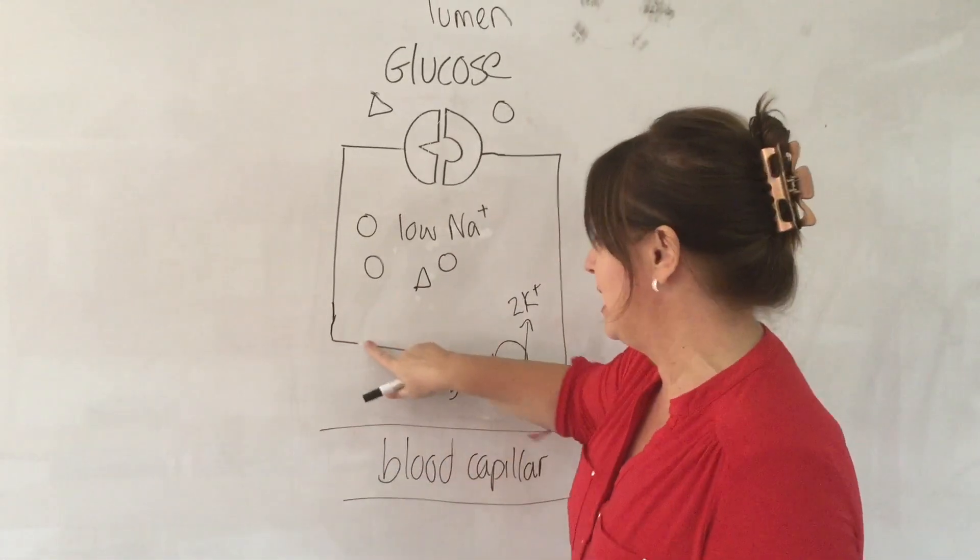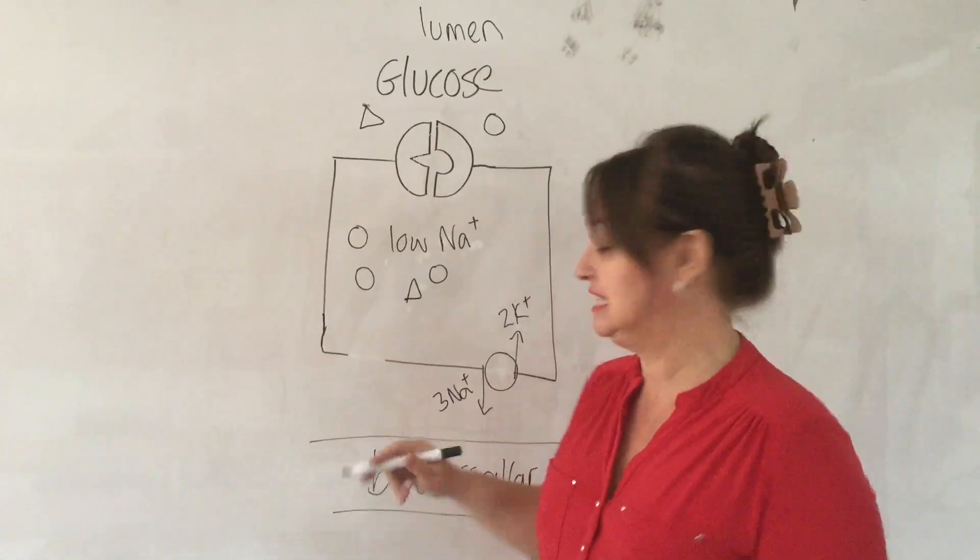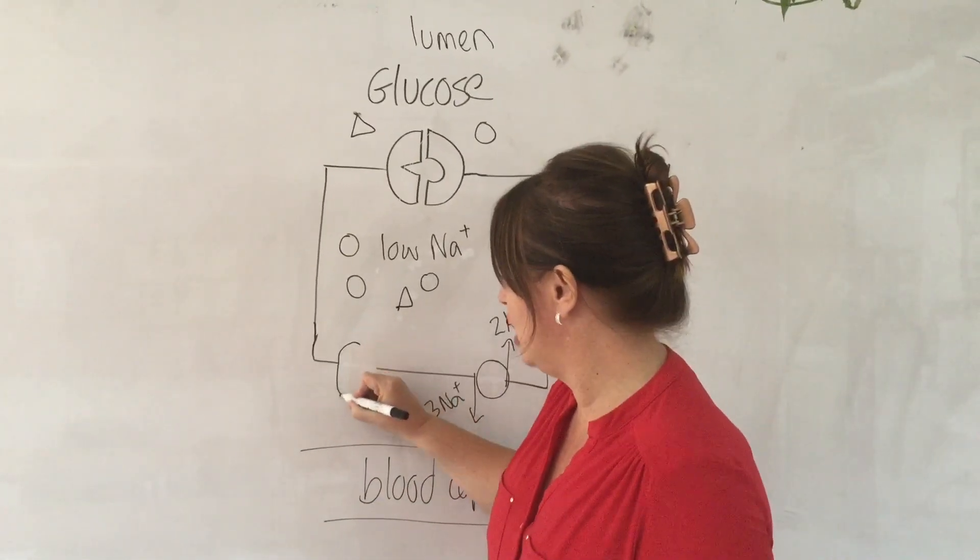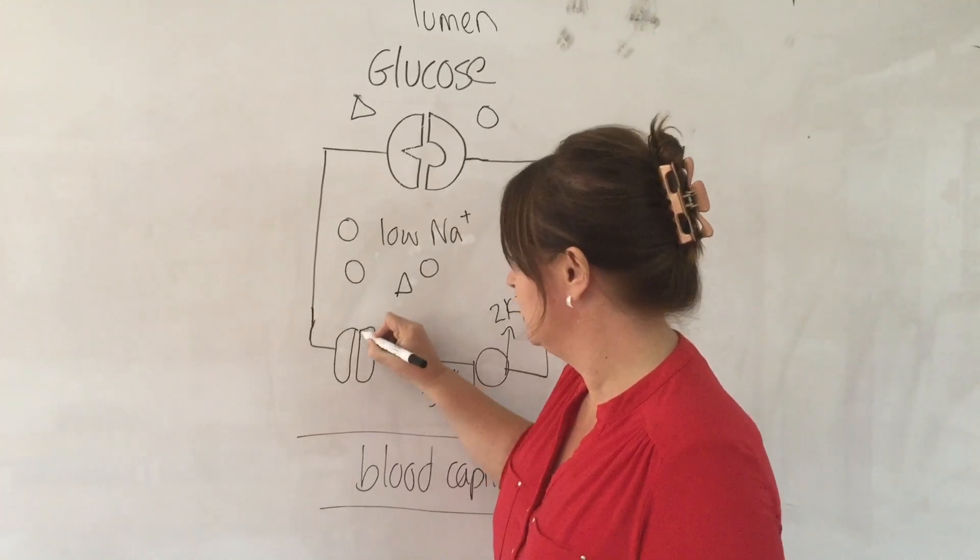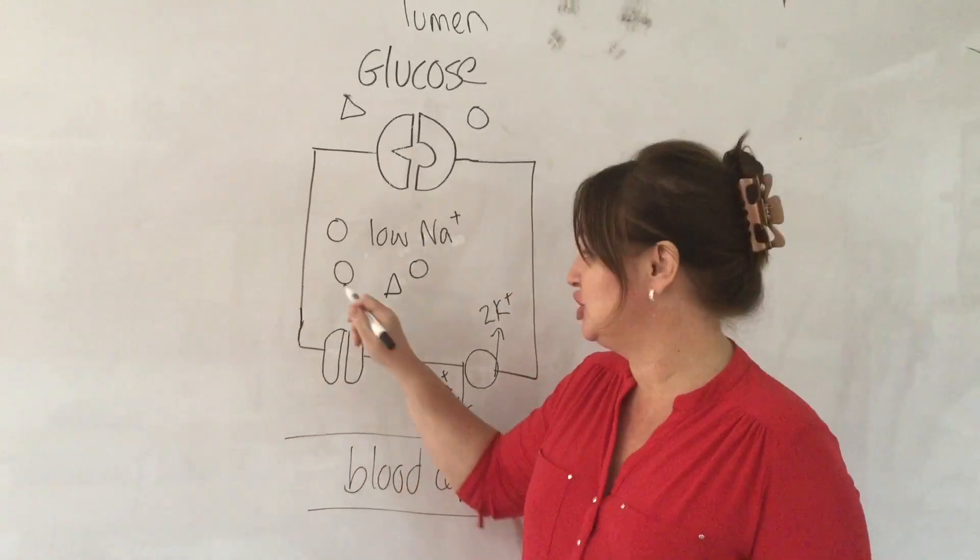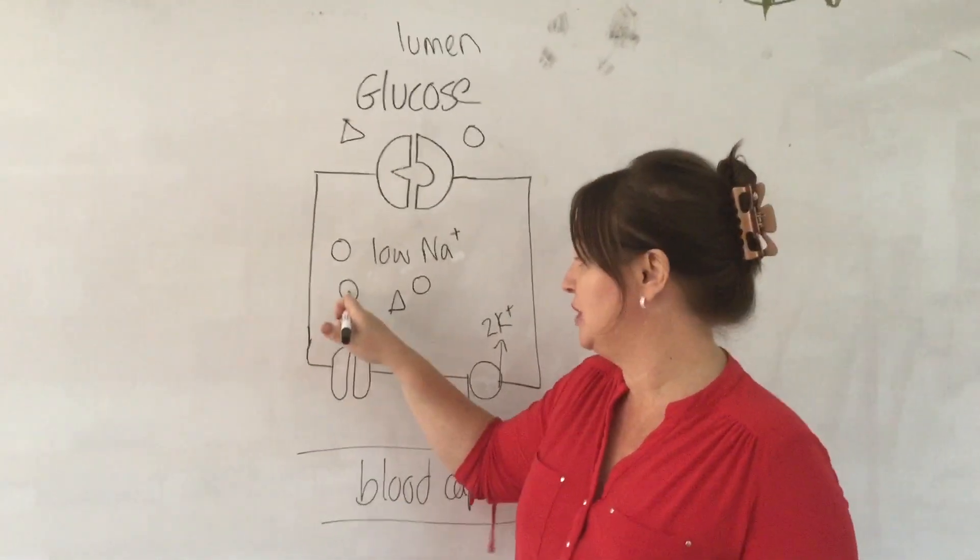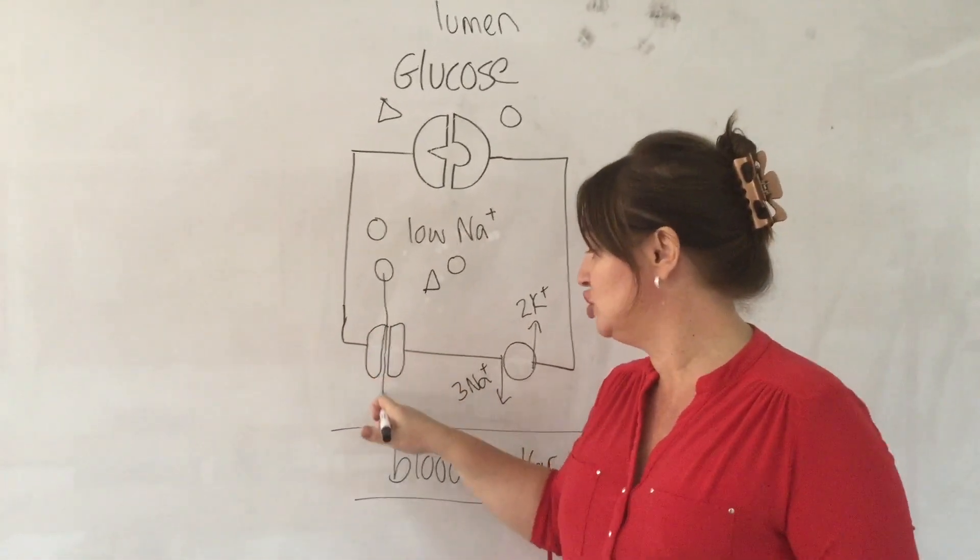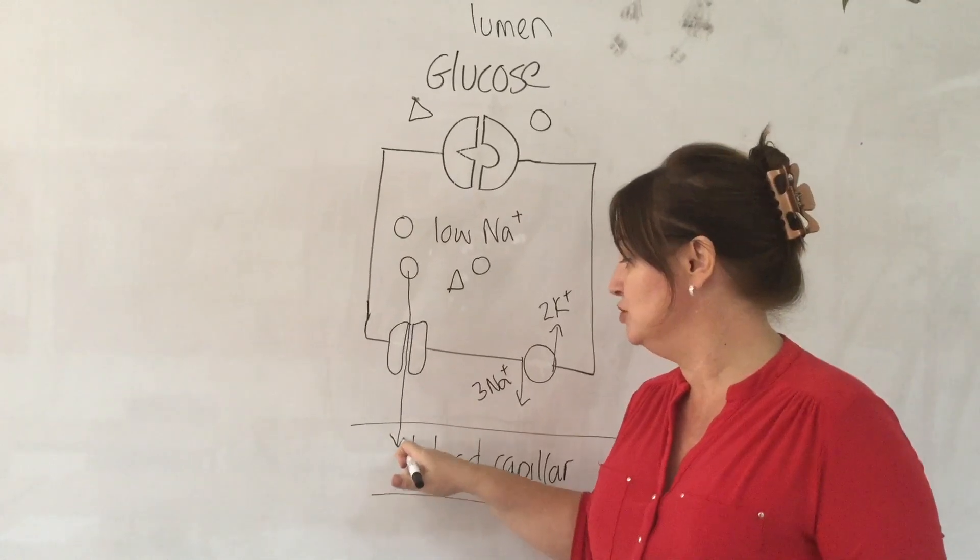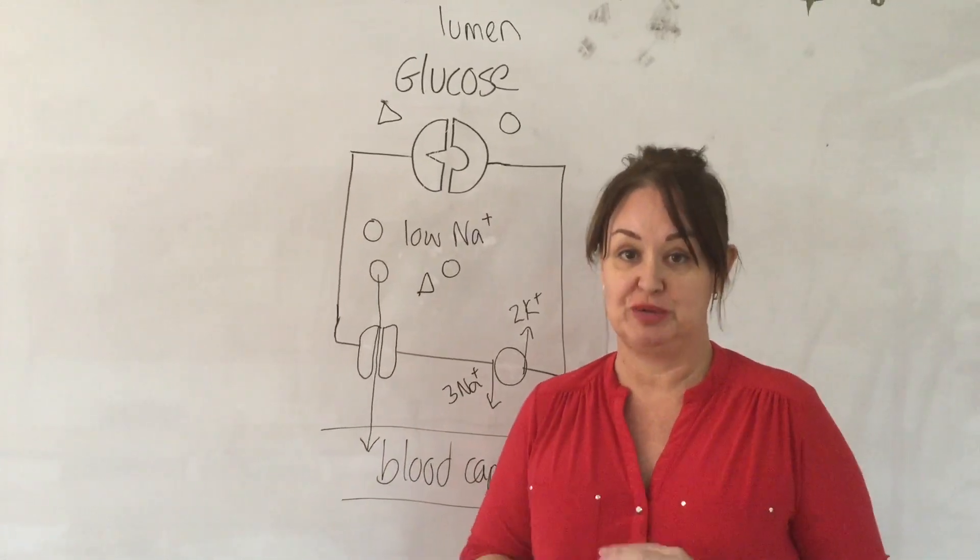And again, what we have, going back two lessons ago when we learned about facilitated diffusion, we've got a channel protein there that allows the passage of polar, of water-soluble substances like glucose through it. And just by diffusion, it moves into the blood capillary.